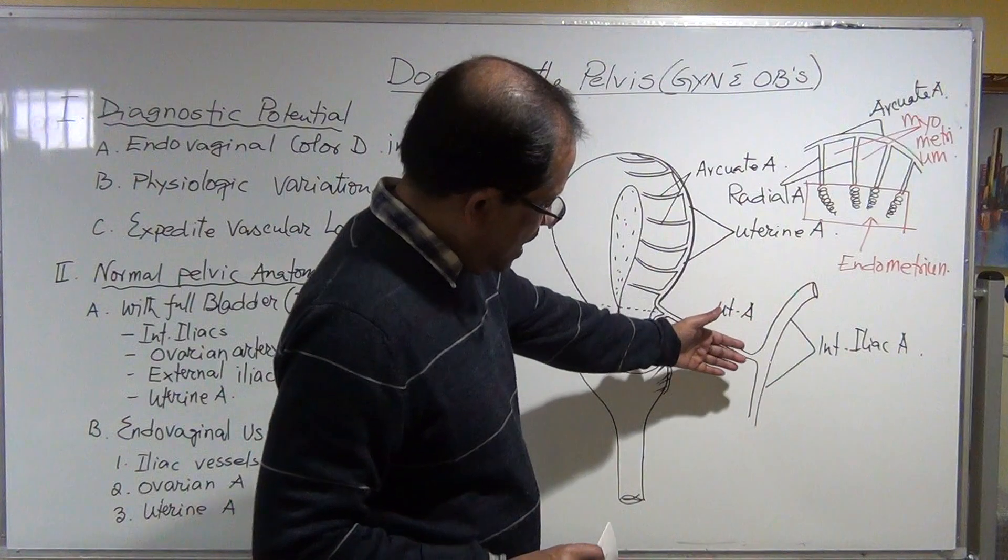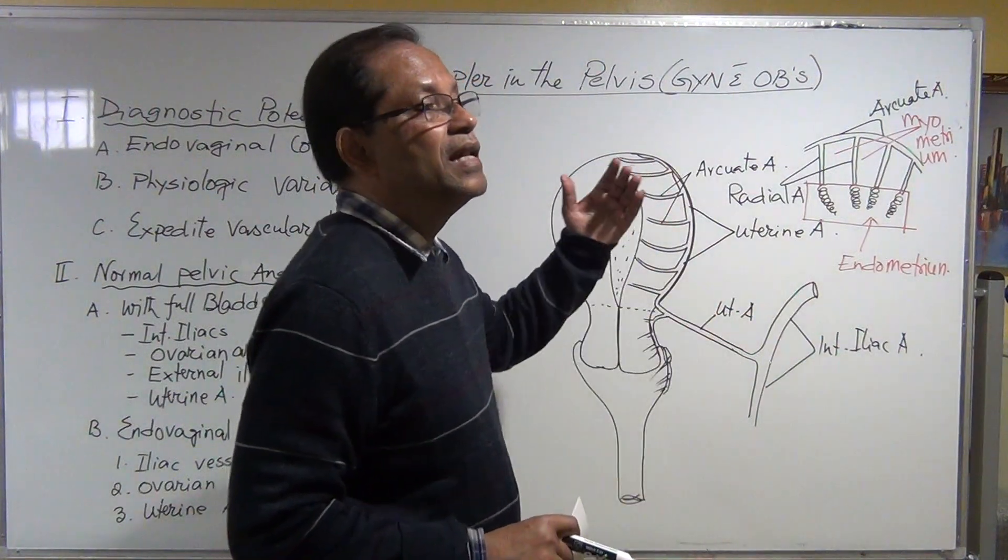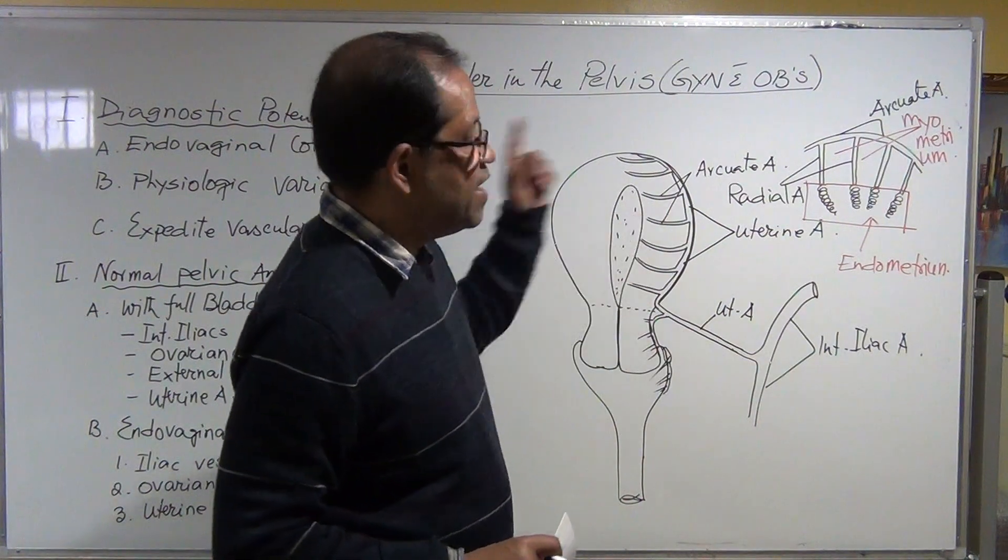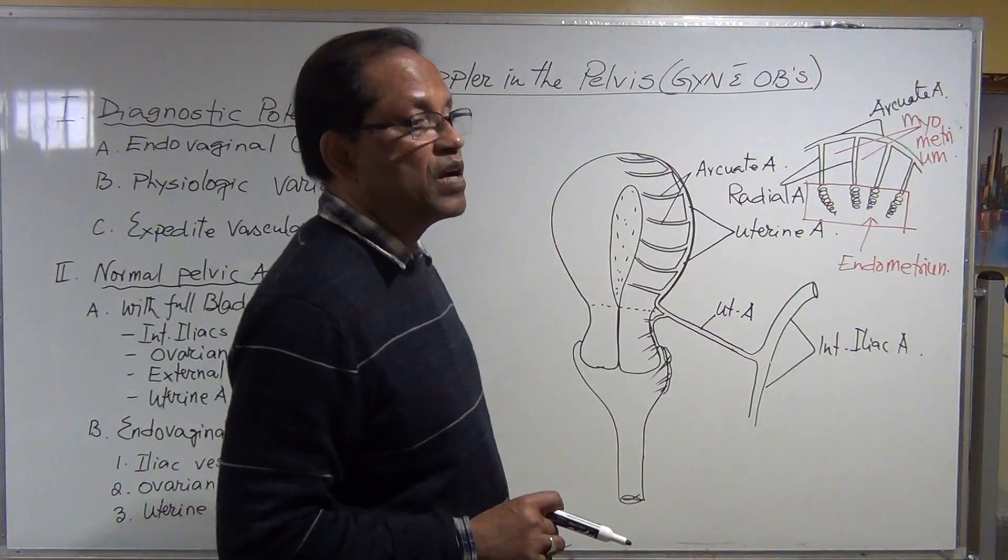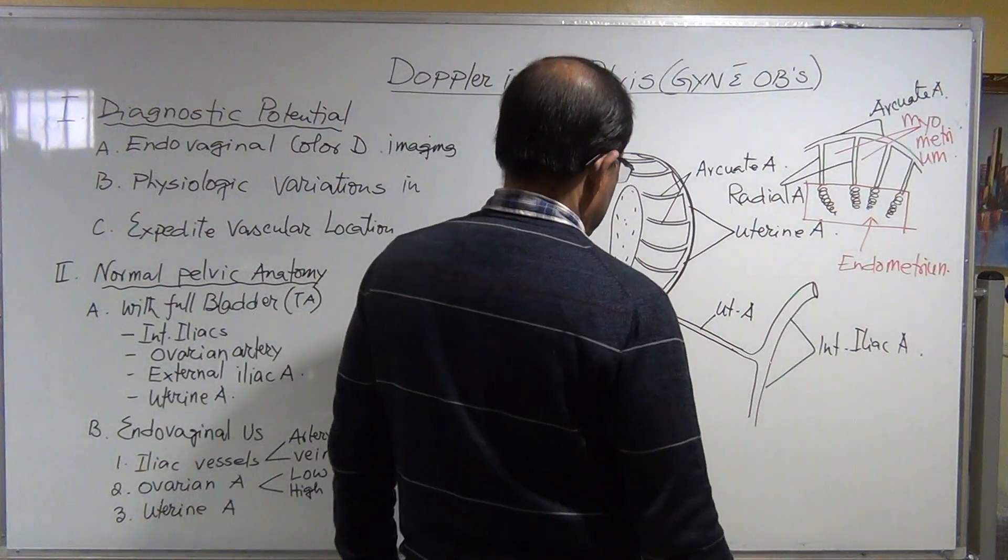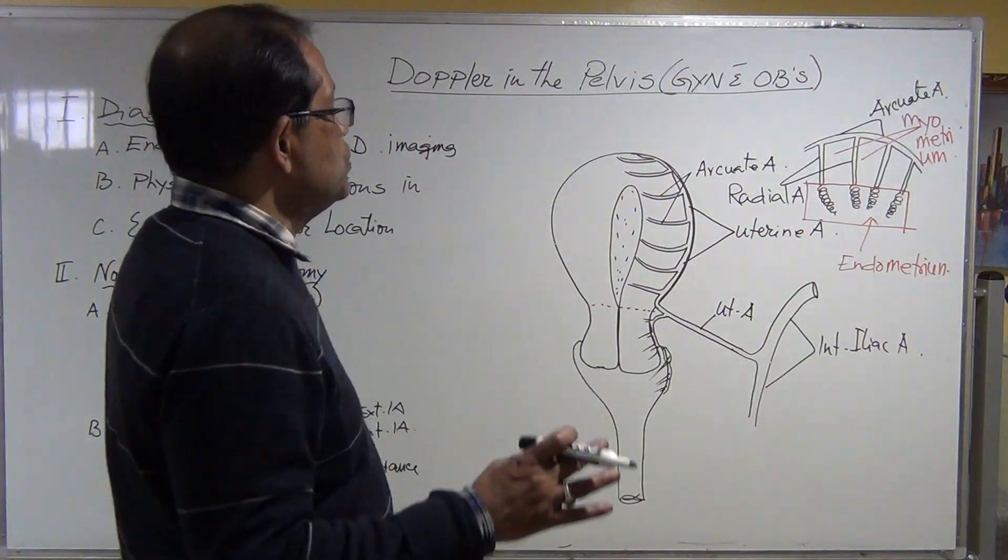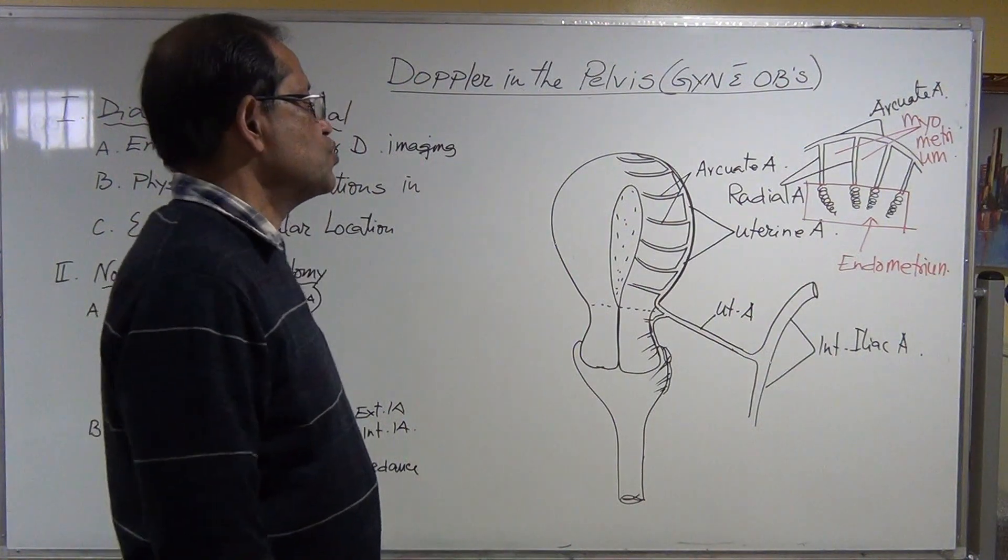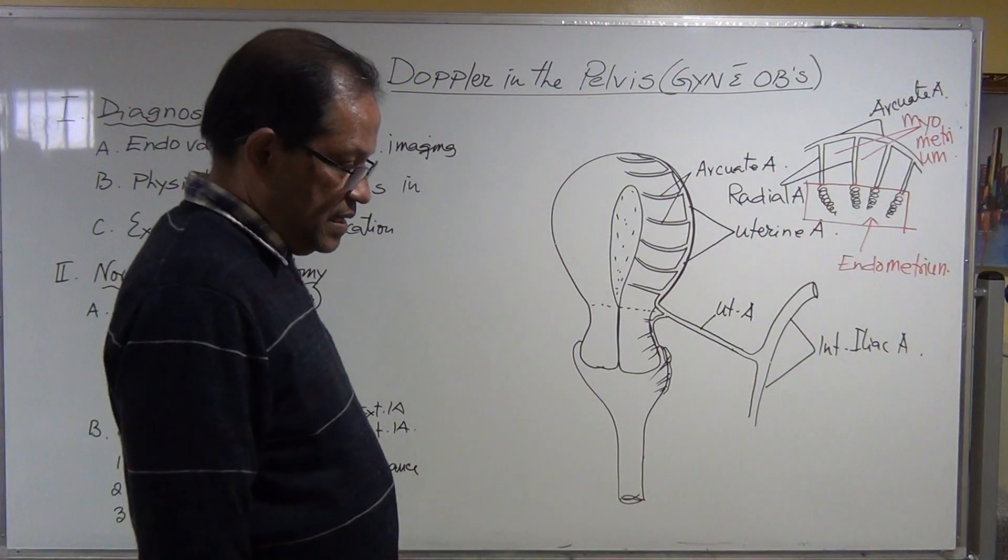If there is some problem in the aorta, there might be aortic aneurysm and the flow through the aorta is coming very less, so that time the uterine artery may have low blood flow. I want to evaluate it.